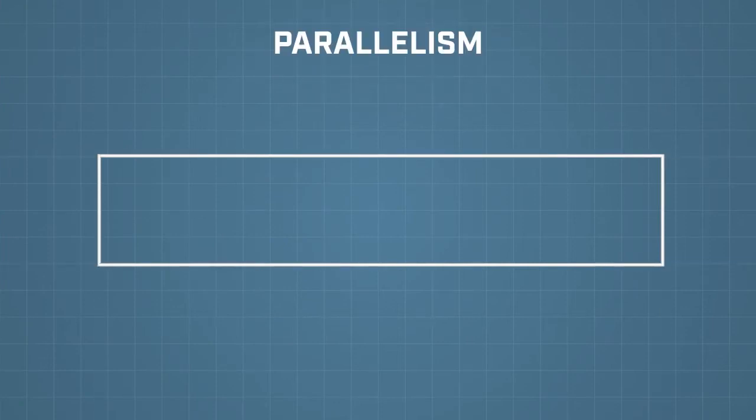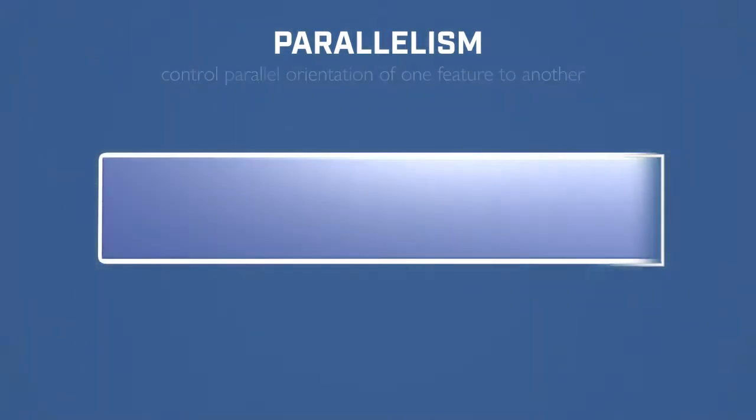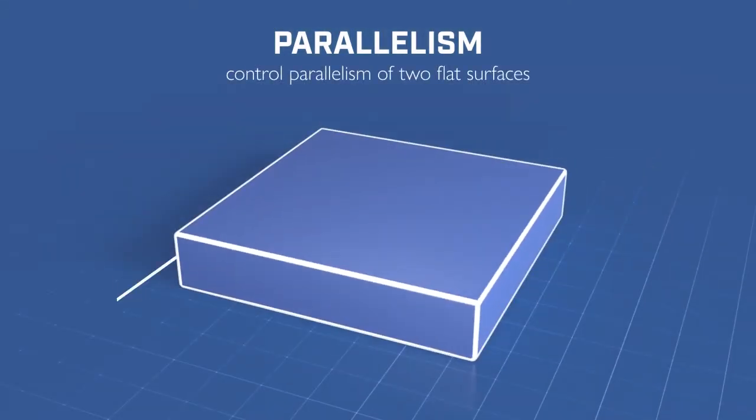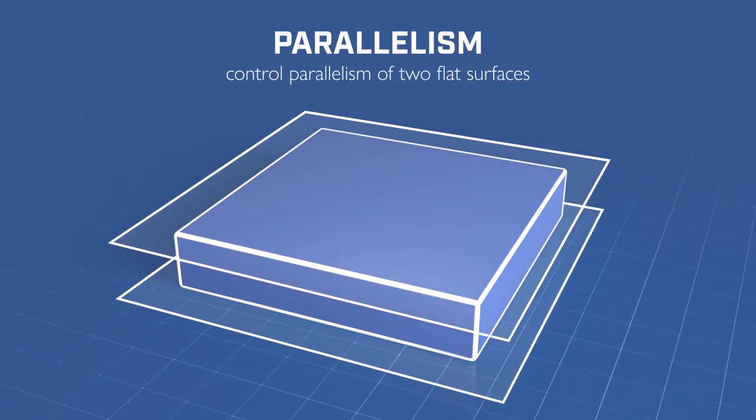As its name implies, parallelism is used to control the parallel orientation of one feature to another. In its simplest case, it is used to control the parallelism of two flat surfaces.